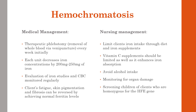Therapy involves removal of excess iron through therapeutic phlebotomy — removal of whole blood via venipuncture — done weekly initially at one unit, then decreasing in frequency as ferritin levels normalize. CBC is monitored to ensure they don't become anemic. Clients should limit dietary iron and iron supplements, limit vitamin C intake (which enhances iron absorption), and avoid alcohol (which impairs liver function). Monitor for organ damage especially cardiac and endocrine, and screen children of clients who are homozygous for the HFE gene.